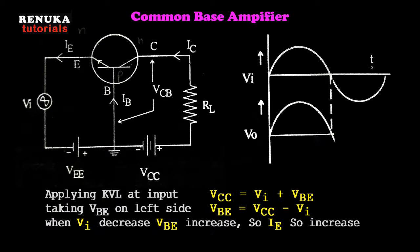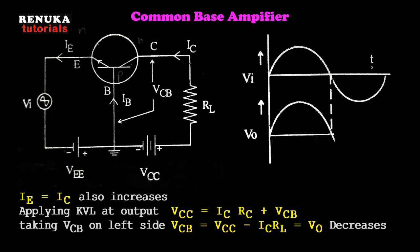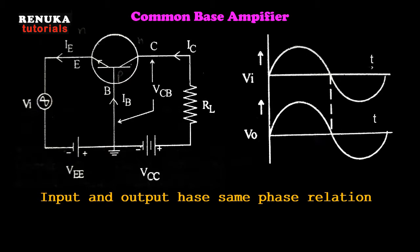During the negative half cycle of the input, VBE starts increasing, causing an increase in emitter current and therefore collector current. This increase in collector current causes a decrease in the collector-to-base voltage VCB. Thus the input and output voltages are in the same phase — a positive half cycle at the input produces a positive half cycle at the output, and a negative half cycle at the input produces a negative half cycle at the output.